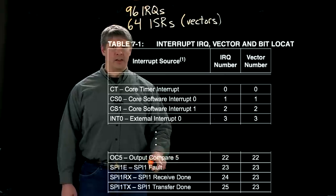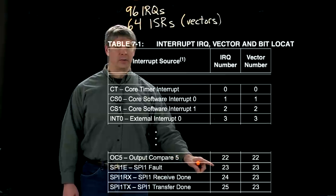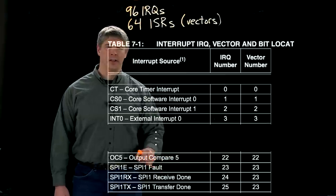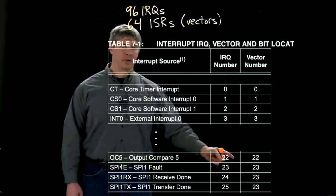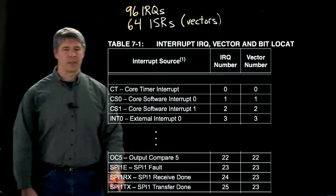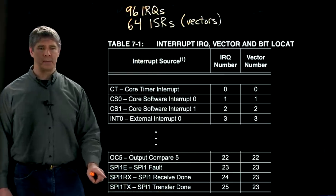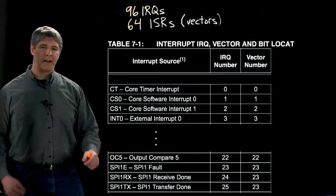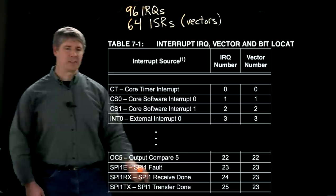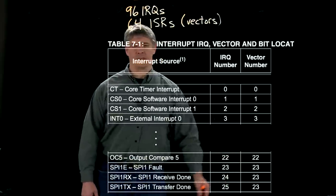And down here we see the 23rd IRQ, which is the SPI1 communication fault, has vector number 23. But also SPI1 receive and SPI1 transfer, which have different IRQs, have the same interrupt service routine, the same vector.